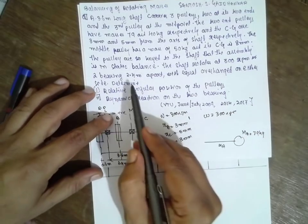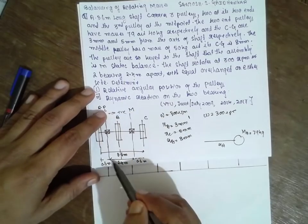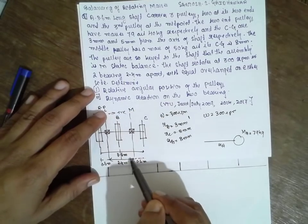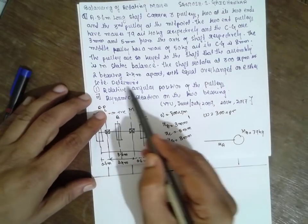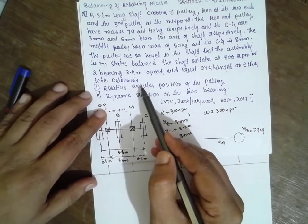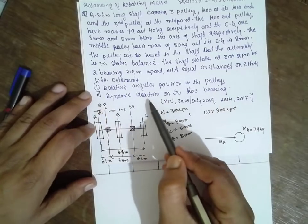The two bearings are 2.4 meters apart with equal overhang on either side. Determine the relative angular position of the pulleys and dynamic reaction of the two bearings.